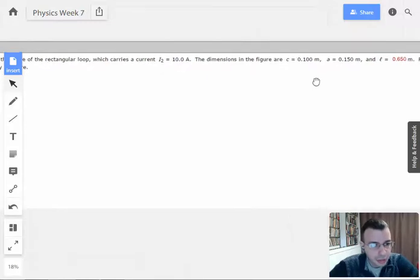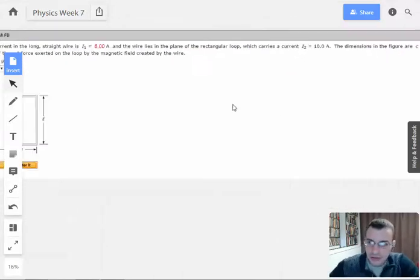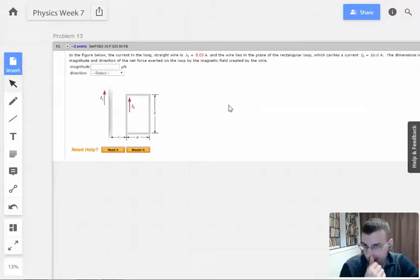Dimensions in the figure are 0.1, 0.15, and 0.65. Find the magnetic magnitude and direction of the net force exerted on the loop by the magnetic field created by the wire.